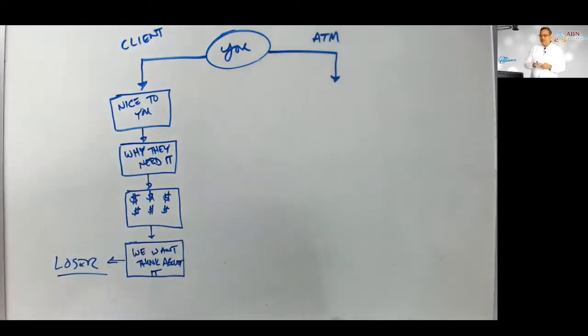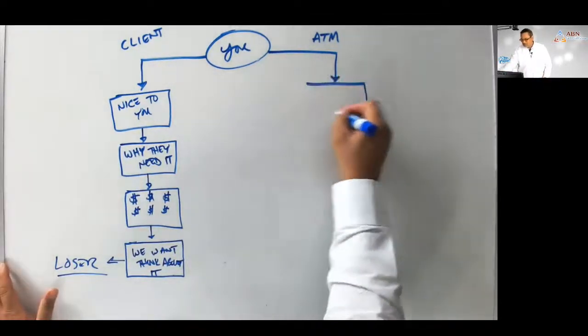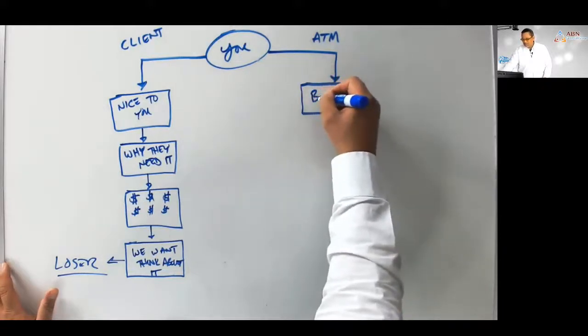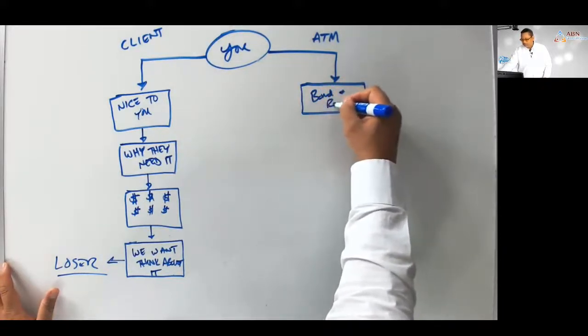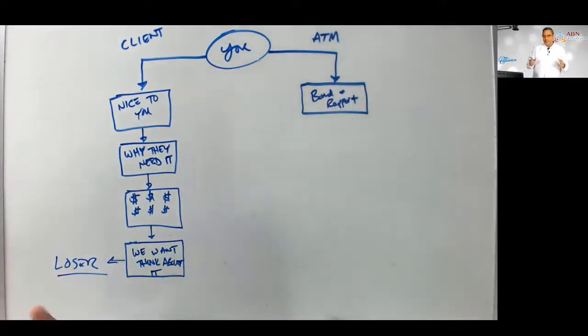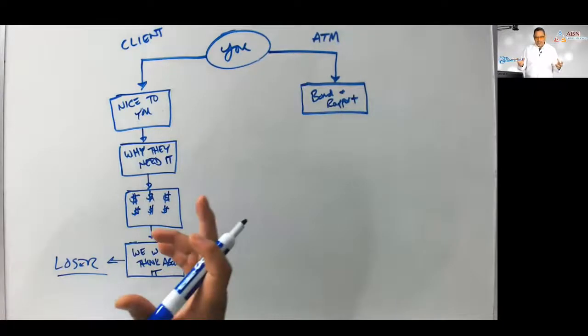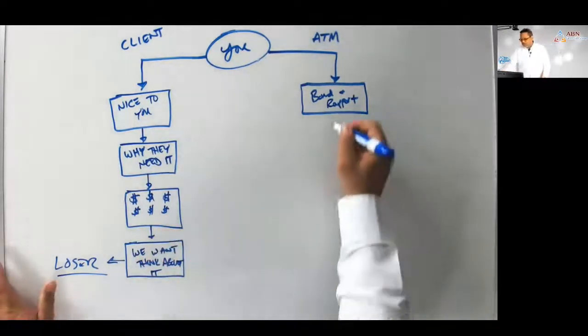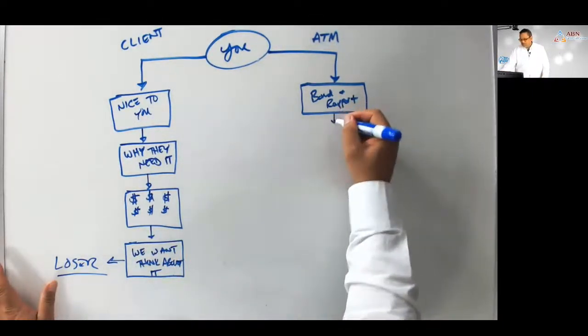What's the alternative? The alternative is our ATM process, and that process starts with the bond and rapport. This is all our techniques in creating trust with the client, bond and rapport with the client.